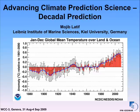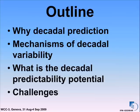I have four points I would like to discuss. First, why decadal prediction? Second, the mechanisms of decadal variability. Third, what is the decadal predictability potential? And finally, the challenge: what does it take to realize the decadal predictability potential that actually exists?